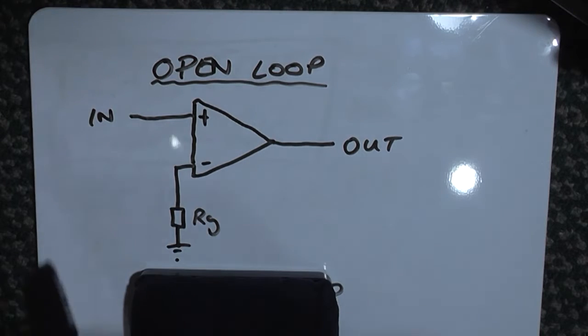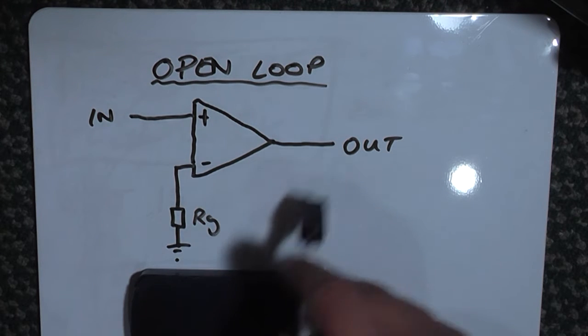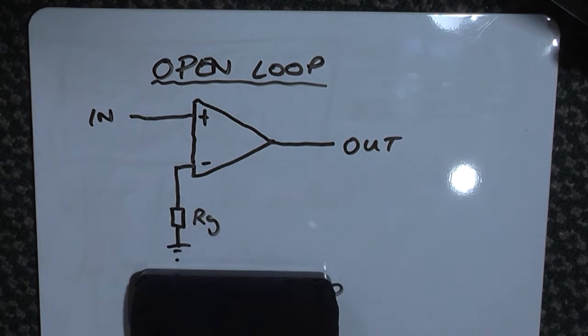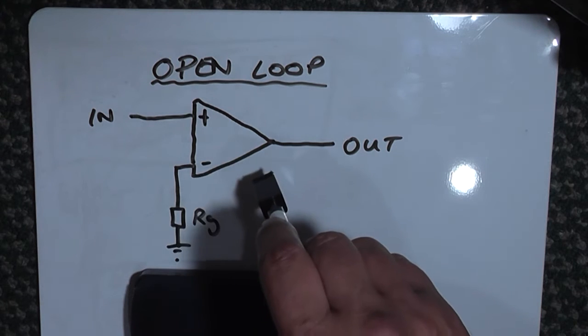When I'm talking about loops, I'm talking about whether we're in an open system or a closed system. This is an open loop gain amplifier. There is no feedback employed at all, so this has a high amount of gain but can distort really early.